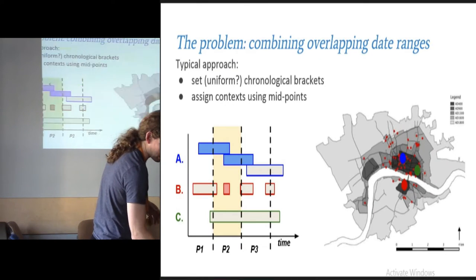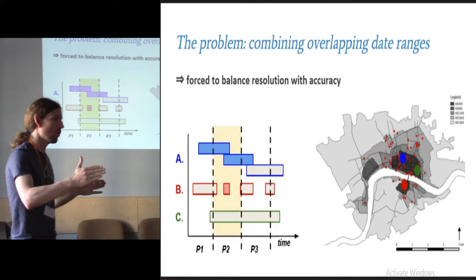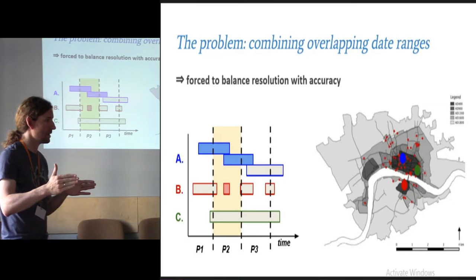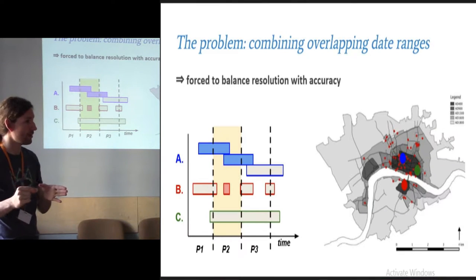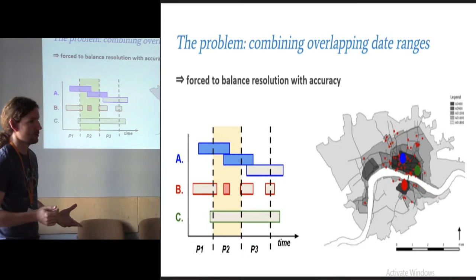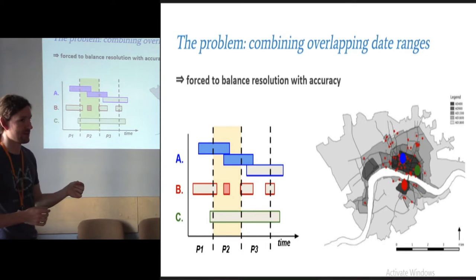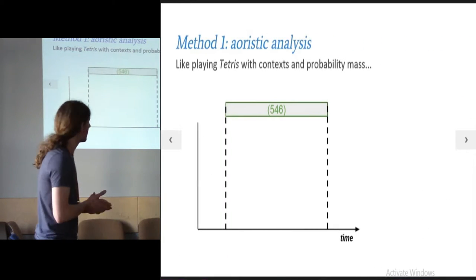This is problematic because you're forced to balance resolution with accuracy. If you make the bins very wide, you've got a pretty good chance that most of your contexts will end up in the correct bin, the true date will actually be in the bin they've been put in, but then you lose resolution. If you make the bins smaller, your resolution increases, but you'll have a higher and higher rate of contexts whose true date actually is not where you put it, which is not ideal.